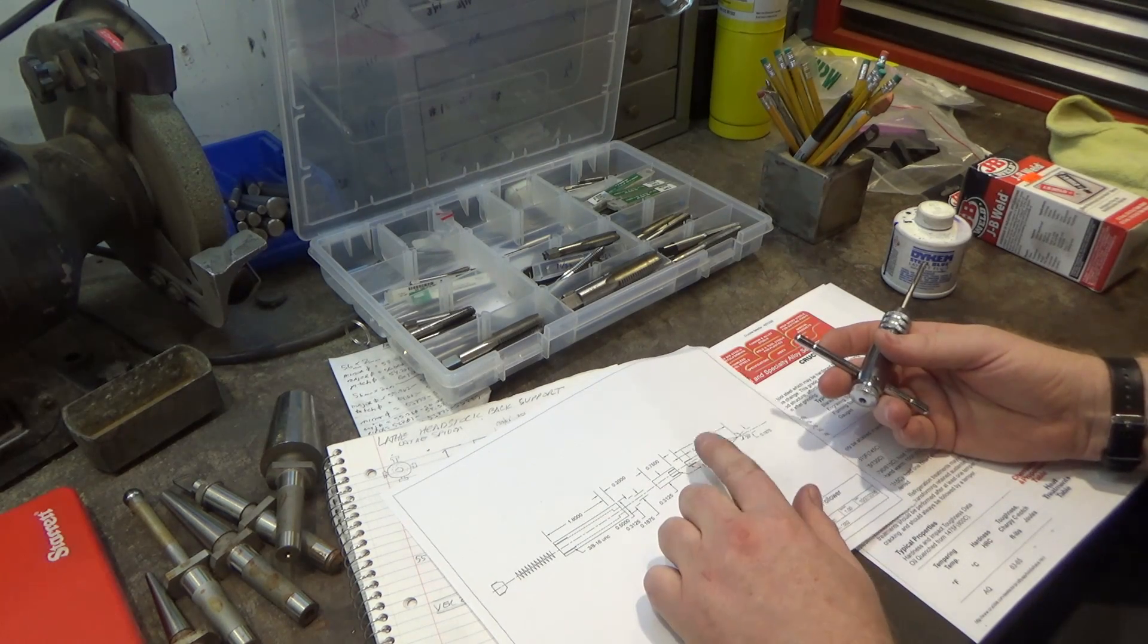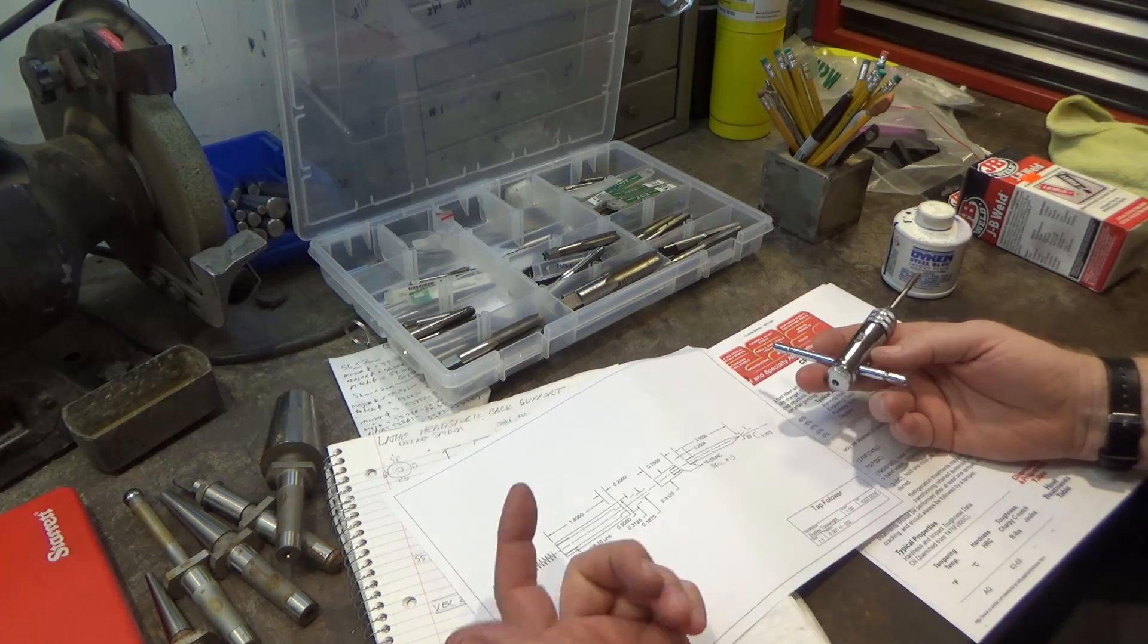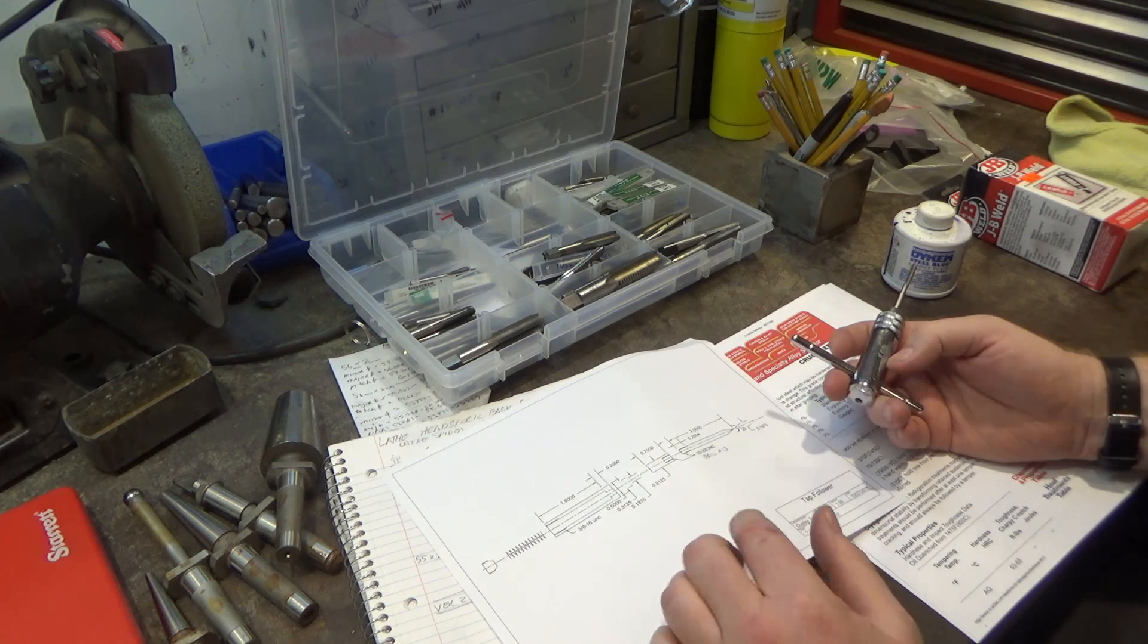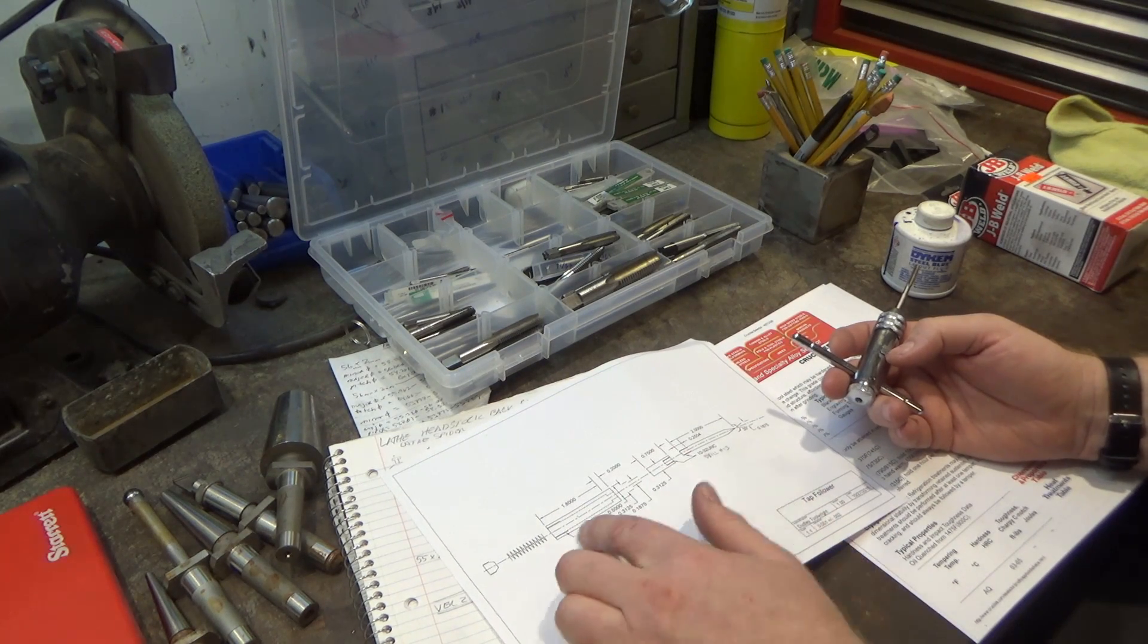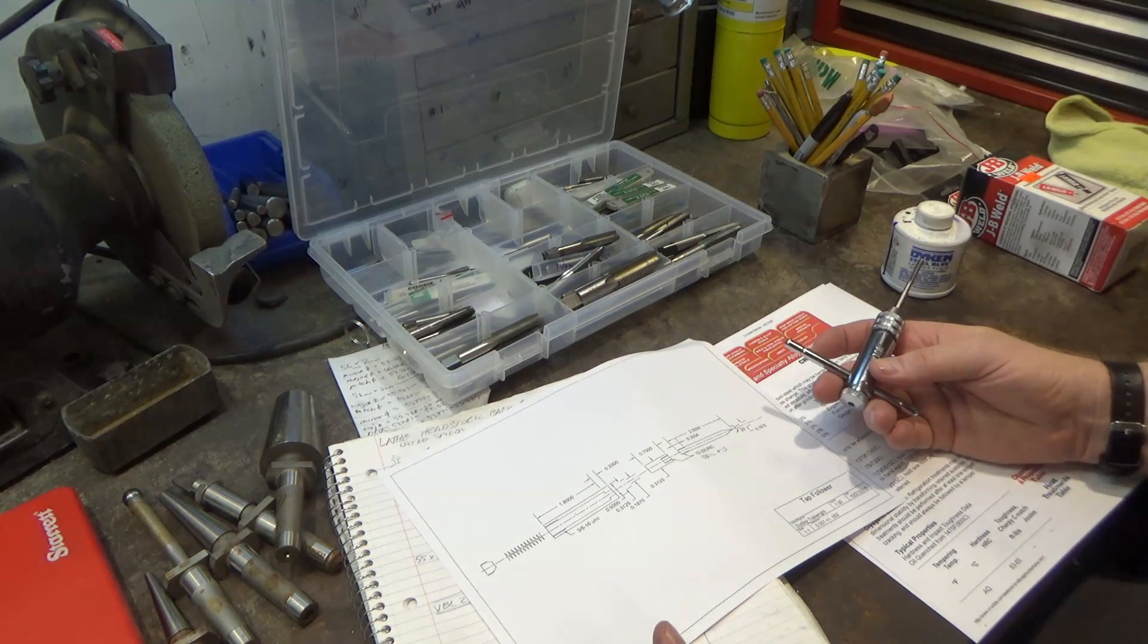I'm going to start with my A2 tool steel, the pointed part of it that I will be heat treating after. That will be a new experiment. And then move on to the follower that goes inside the tube along with the tube and that's it. Let's move on.